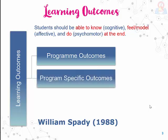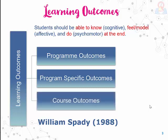The second component is Program Specific Outcomes (PSO) — these are the abilities of students upon completion of a specific degree program. The last one is Course Outcomes (CO) — these are statements describing the outcomes upon completion of a course. Course outcomes refer to the knowledge, skills, and attitudes that the students will demonstrate at completion of the course, such as a subject like Indian History or Spectroscopy.